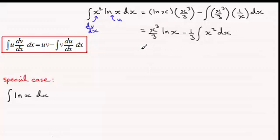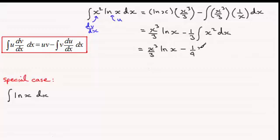So if we now look at this integral here, x cubed over 3 times the natural log of x. And then if we integrate x squared, that's going to be x cubed over 3, times it with the negative 1 third, and that's going to give us minus 1 ninth x cubed. And then we've got the constant of integration plus c.